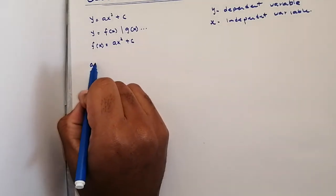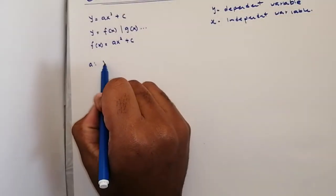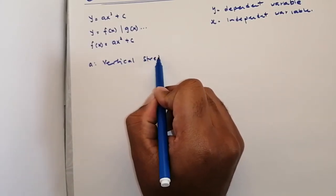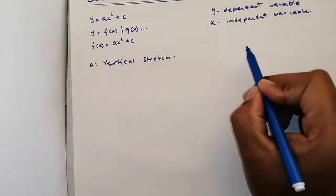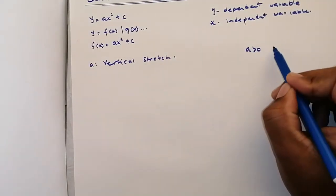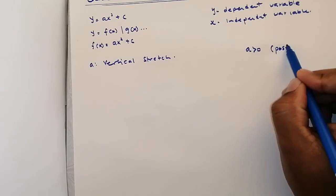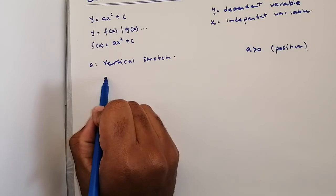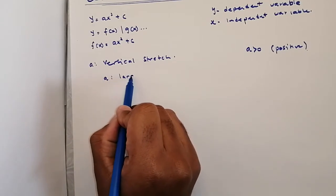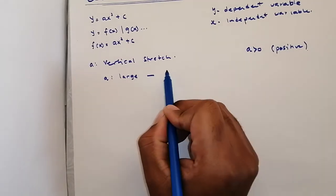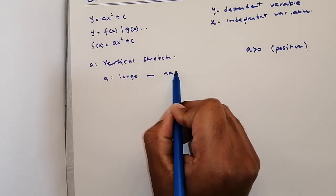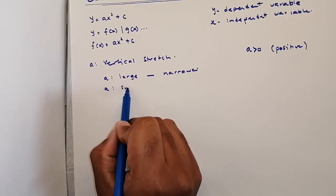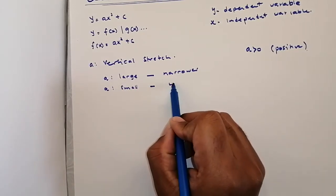First of all, let's look at the value of a. The value of a is responsible for the vertical stretch of the graph. We're going to look at cases where a is positive, greater than zero. When the value of a is large, the graph will become narrower. When the value of a is small, the graph will be wider.